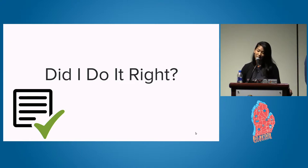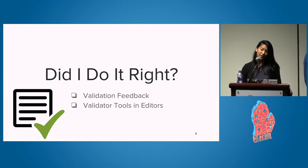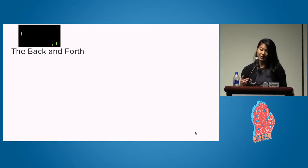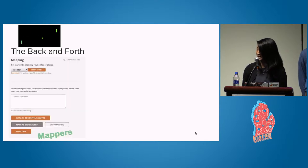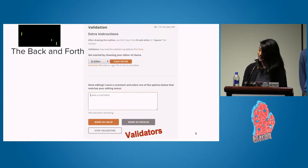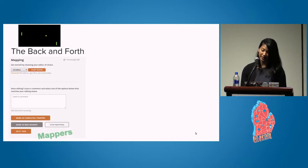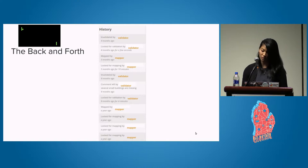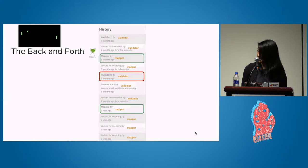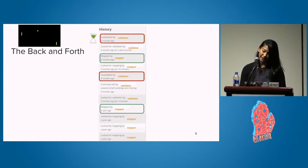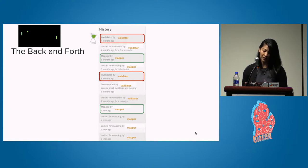Now to the question of did I do it right? We'll talk about how validation feedback is currently given to mappers by validators, as well as validator tools in the editors. We were motivated to create Map Rules because of the back and forth that occurred between mappers and validators that added a lot of time to task completion. After a mapper marks a task as complete in Tasking Manager, a validator has to pick it up, review all the features and tags, and write comments about why the edits may be invalid. Then a mapper would read the comments, revise the work, and mark the task as ready to be validated again.